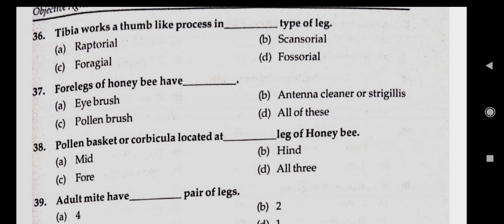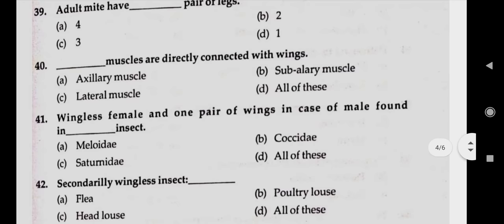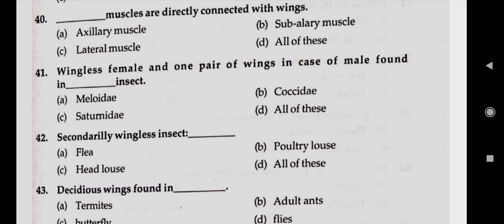Question number thirty-nine: adult mites have dash pairs of legs. Answer A, four. Question number forty: dash muscles are directly connected with the wings. Answer A, axillary muscles.